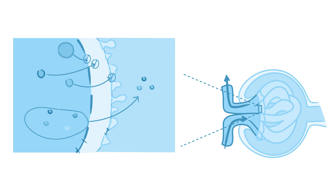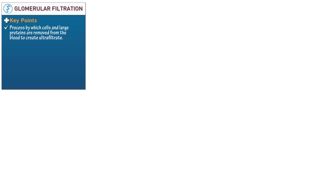Here we'll learn about glomerular filtration, which is the first step in urine formation. To begin, let's start a table and denote that glomerular filtration is the process by which cells and large proteins are removed from renal blood to create ultrafiltrate. It occurs within the renal corpuscle, which is the first part of the nephron. Glomerular filtration is driven by dynamically opposing pressures that are exerted by the contents of the blood and ultrafiltrate.